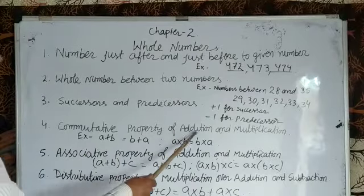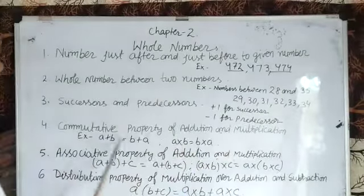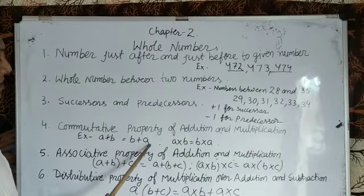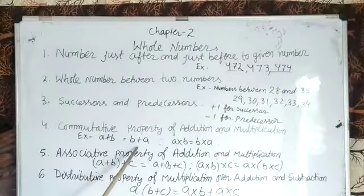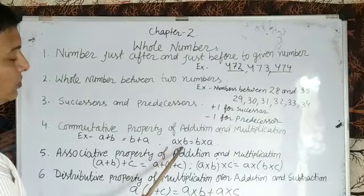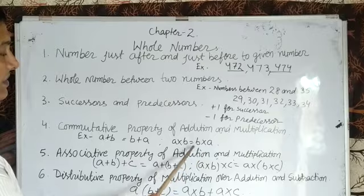In this, a plus b equals b plus a. For example, 2 plus 3 equals 3 plus 2, the answer is same. Same for multiplication: 2 into 3 equals 3 into 2, the answer is always same.